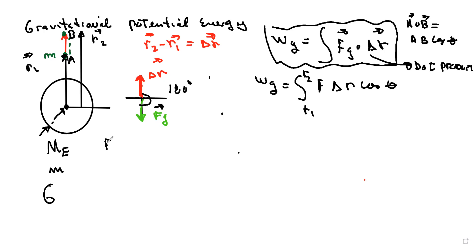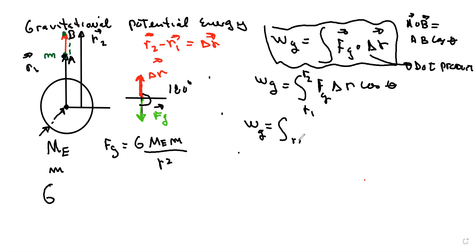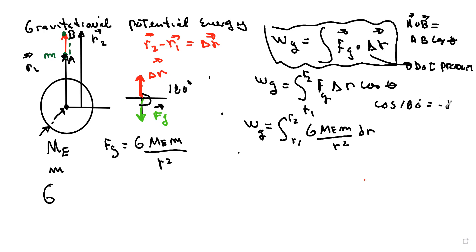The force of gravity is G times the mass of the Earth times the mass of the little particle, divided by r squared. The work done by gravity is the integral from r1 to r2 of G·M·m over r² dr, multiplied by cosine(180°), which equals minus one — that's where the negative sign comes from.